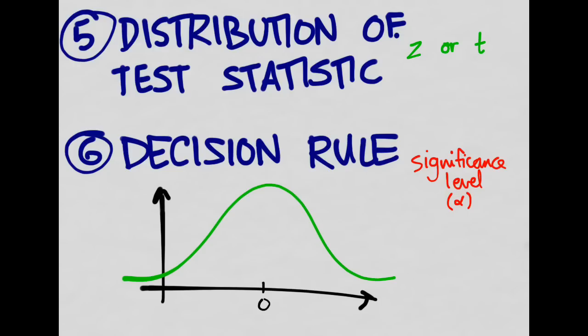Alpha is the probability of having a null hypothesis that is indeed true but our data says it's wrong — the probability of rejecting a true null hypothesis. The commonly accepted alpha is 5%. By convention, we are willing to make a mistake of 5% of falsely rejecting something that is true and should have been accepted.